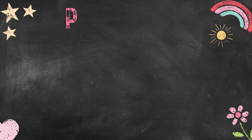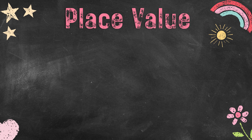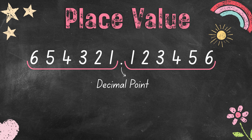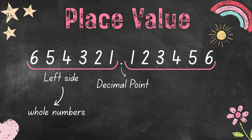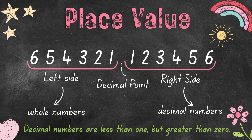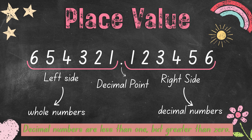Now let's talk about place value. The point at the center is called the decimal point. The numbers to the left side of the decimal point are the whole numbers, while the numbers to the right side of the decimal point are called decimal numbers. In short, decimal numbers are less than 1 but greater than 0.